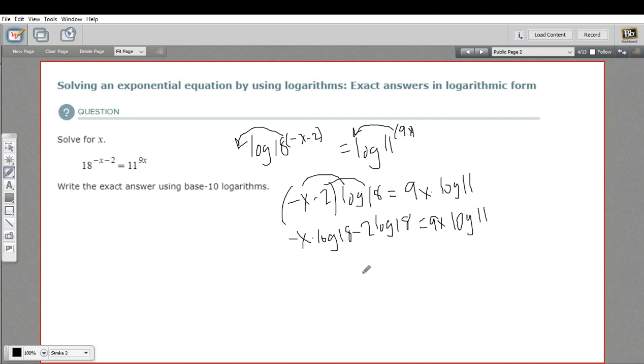The next step is to get all our x terms on one side of the equation. I can do that by adding x times the log of 18 to both sides. That'll cause these two terms to disappear. So over here, these add up to zero. I'm just left with negative 2 times the log of 18 equals 9x times the log of 11 plus x times the log of 18.